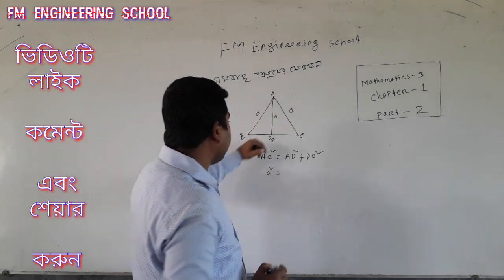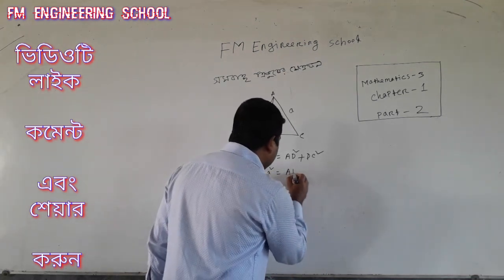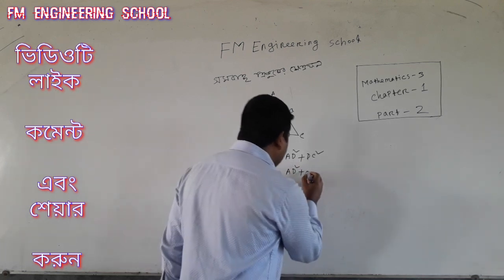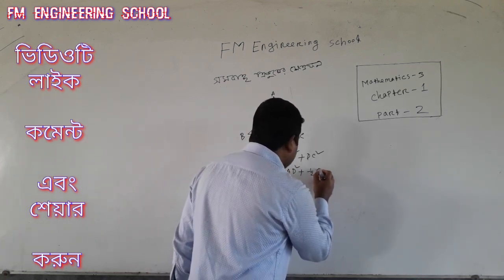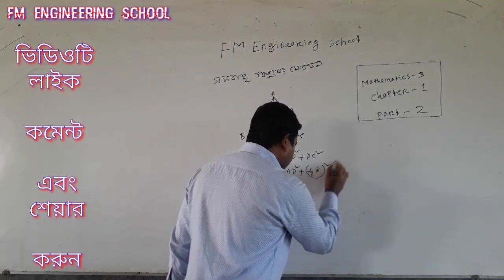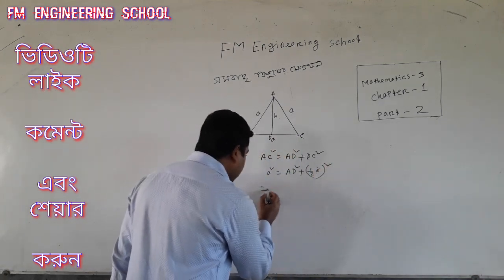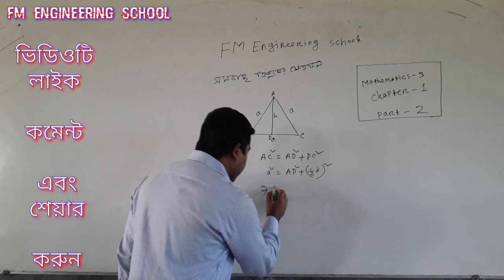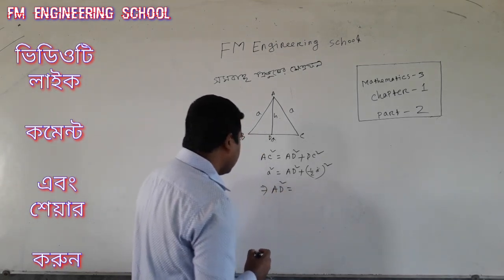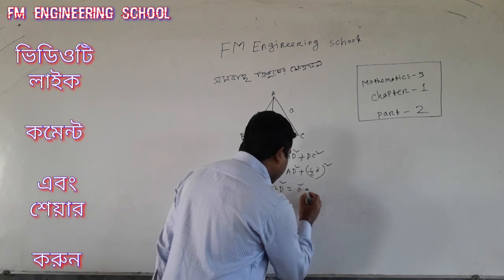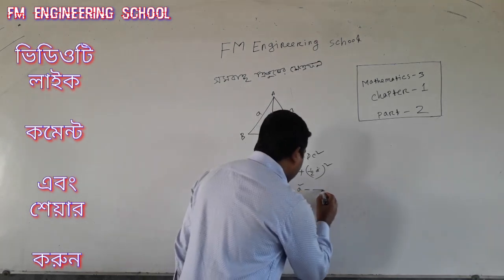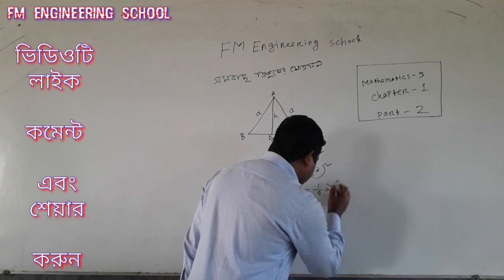ADS² is known. ADS² will be equal to B plus ADC minus A half A square. So here we will do this — ADS² is what is being added, so this is ADS² minus A square.